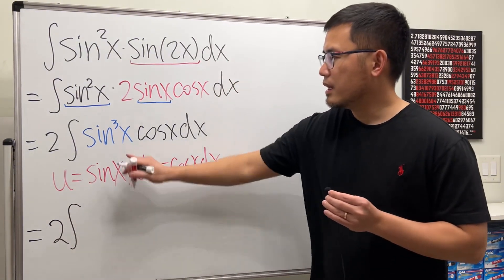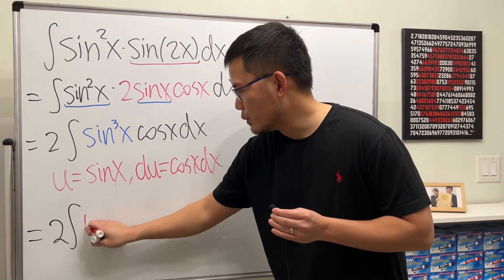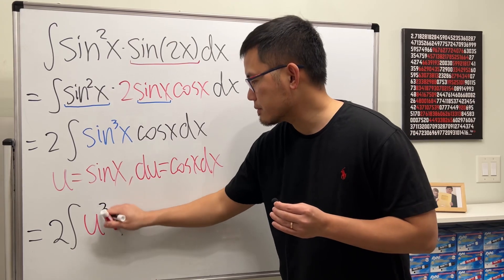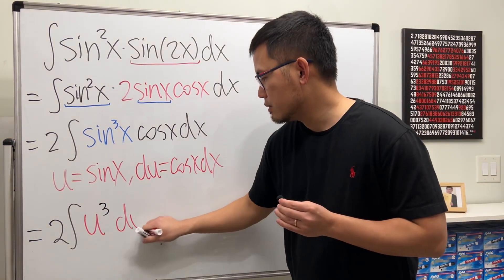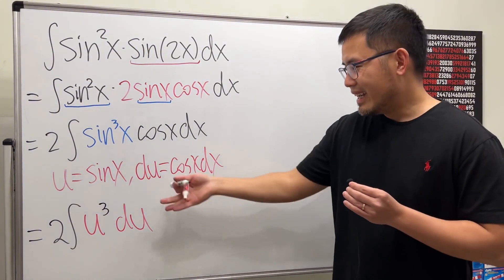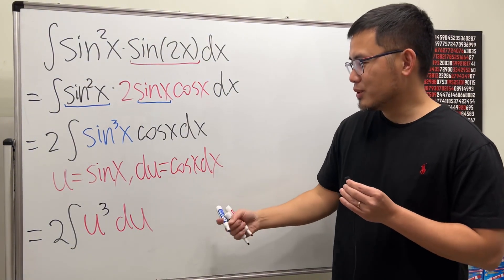So as you can see, this is now two times the integral—this is the u, so we have u to the third power, and then this right here is just our du. And to integrate this, of course we can just do the reverse power rule.